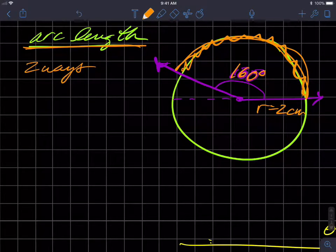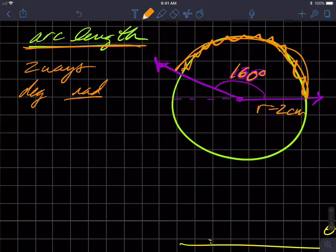I'm sure there are more than two methods, but the two primary methods at this level are to either use degrees or use radian measure. First of all, we're going to use degrees because I already have this drawing with the information in degrees and a radius of two centimeters.